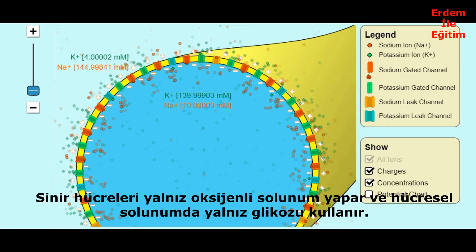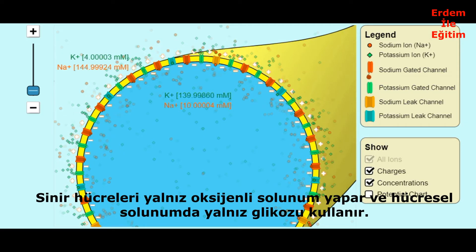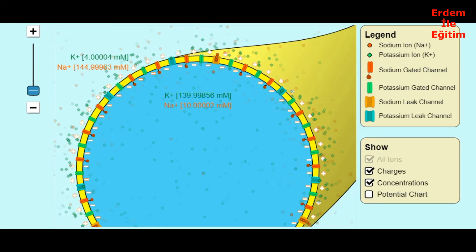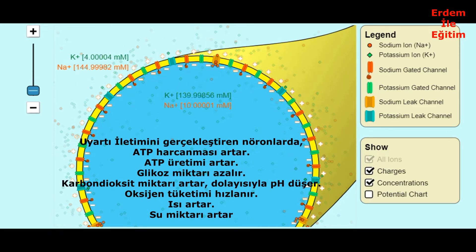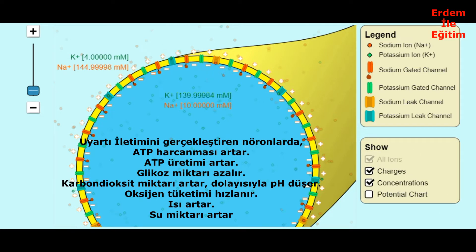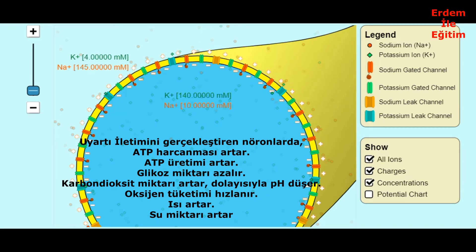Nerve cells breathe only with oxygen and use only glucose in cellular respiration. In neurons that carry out excitation conduction, ATP expenditure increases and ATP production increases. The amount of glucose decreases, carbon dioxide increases so the pH decreases, oxygen consumption is accelerated, heat increases, and the amount of water increases.